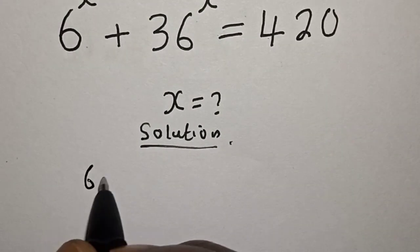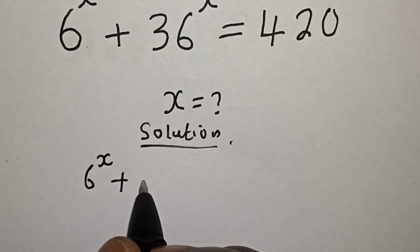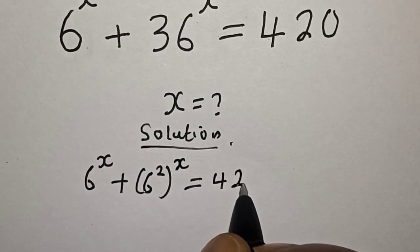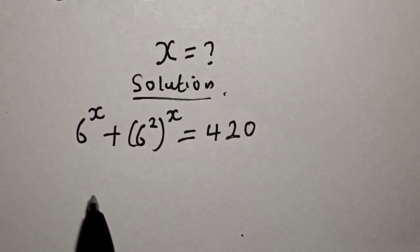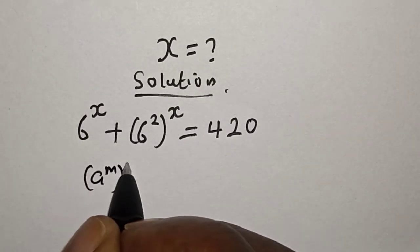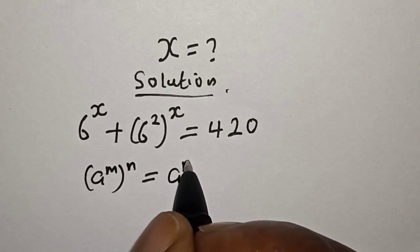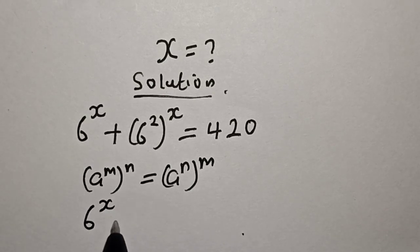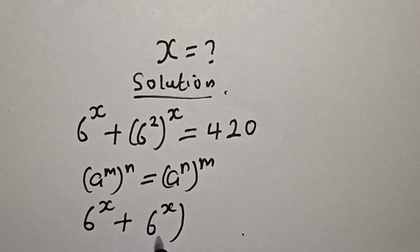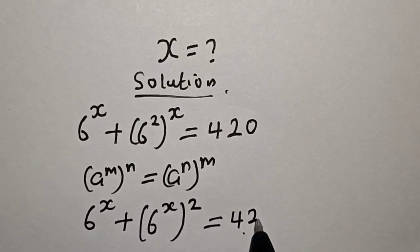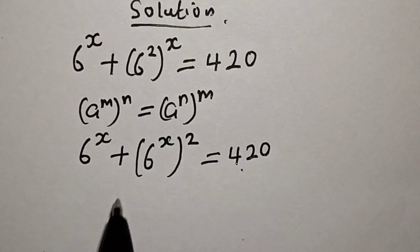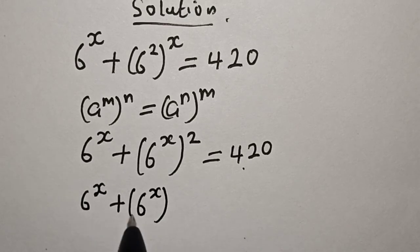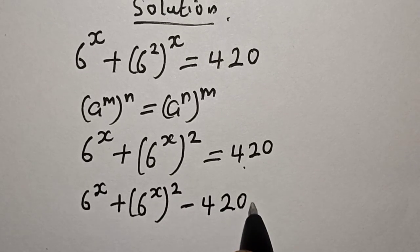We have 6 raised to power s plus 36 raised to power s. Since 36 can be written as 6 squared, we apply the rule that a raised to power m raised to power n equals a raised to power m times n. This becomes 6 raised to power s plus 6 raised to power 2s is equal to 420.